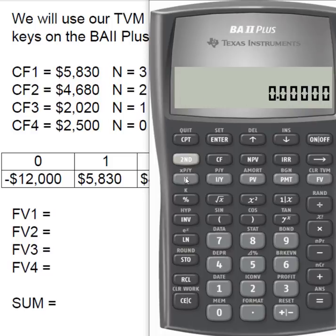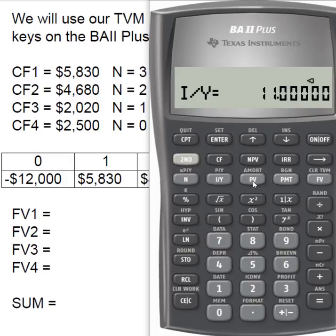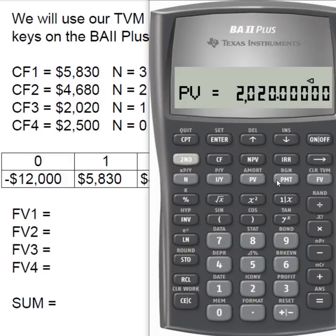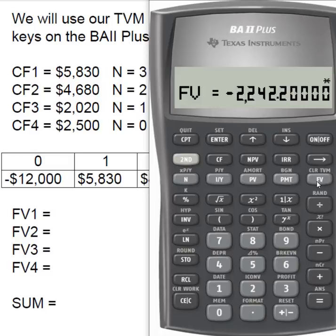Clear your time value of money keys and do cash flow three. Cash flow three has N equals one, IY equals 11, and present value of $2,020. With no payment, I compute the future value. Cash flow three has a future value of $2,242.20. And because cash flow four has N equals zero, its future value is simply $2,500.